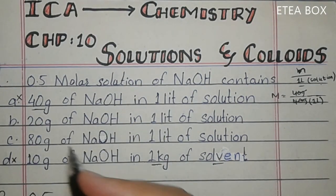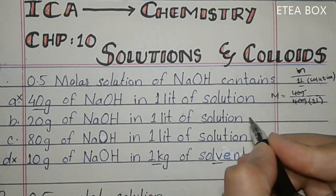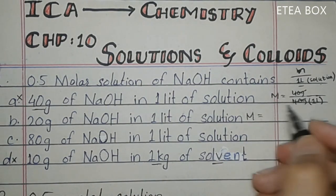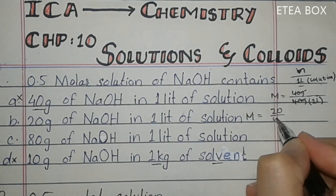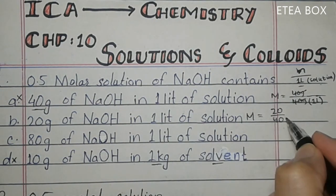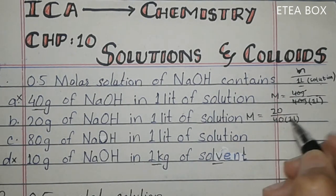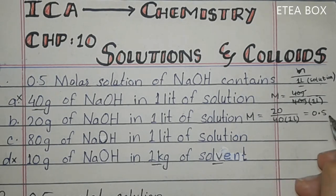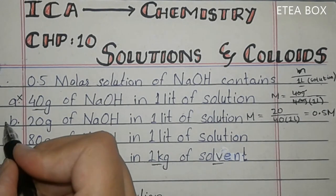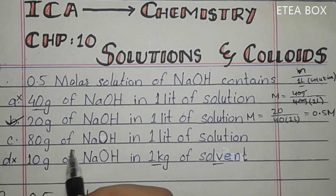Now look at option B: 20 gram of NaOH in 1 liter of solution. Molarity equals number of moles: 20 gram divided by 40, multiplied by 1 over 1 liter. That gives 0.5 — so 20 divided by 40 gives 0.5, divided by 1 gives 0.5 molar. Option B is correct.